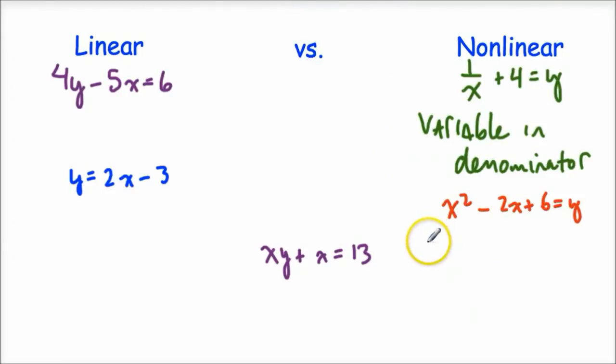So here we have an exponent other than 1. So if we have something squared or cubed to the fourth to fifth and so on, we know that that is going to be a nonlinear equation.